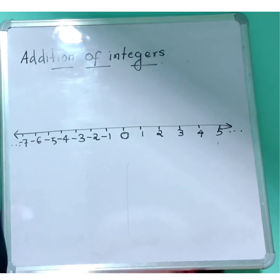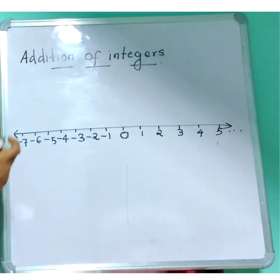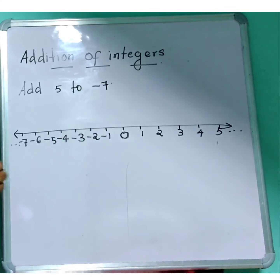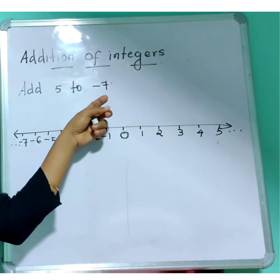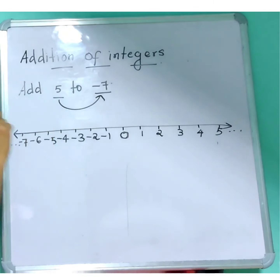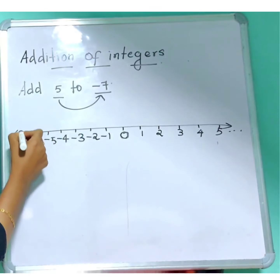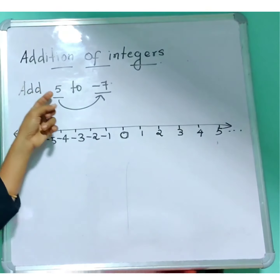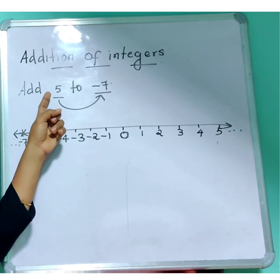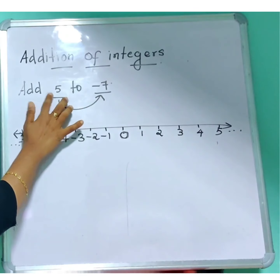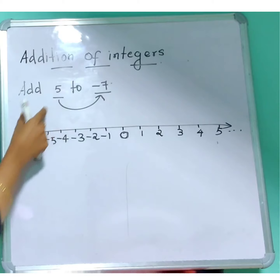Now let us see how we can add two integers. Let's take one example — let us add 5 to minus 7. We are going to add 5 to minus 7. So what you have to do? You have to take minus 7 as the starting point. Now, 5 has no minus sign, so 5 is a positive integer. Since 5 is a positive number, you move to the right side.